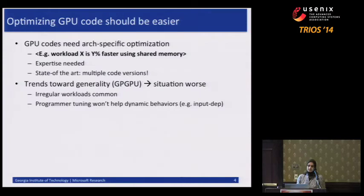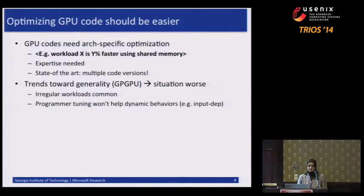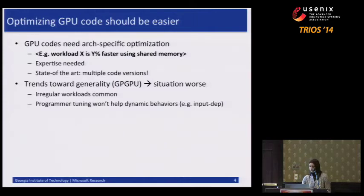The situation is worsened by a trend towards generality, where we want to apply GPU computing to general purpose applications. These applications weren't necessarily suited to the very regular data-parallel model of the GPU, but can benefit because they have regions of code that are data parallel. Since GPUs are pervasive, even if you do programmer tuning for input-dependent behaviors, it's not really helpful to do that statically — you have to figure out how to do it dynamically to react to changing inputs.